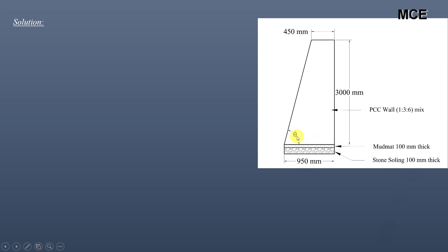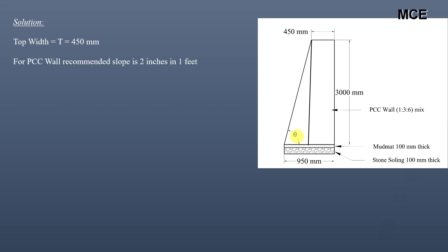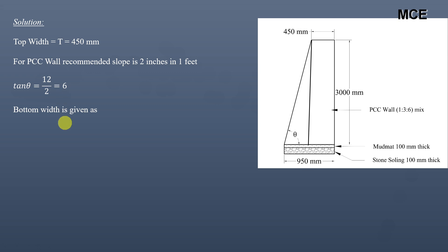We are concerned with finding the bottom width of the wall, and theta is the slope of the wall. The top width is 450 mm. Always remember that for a PCC wall the recommended slope is 2 inches in 1 foot — meaning if we move 1 foot upward we also move 2 inches in the horizontal direction. Since 1 foot equals 12 inches, tan θ = 12 ÷ 2 = 6.